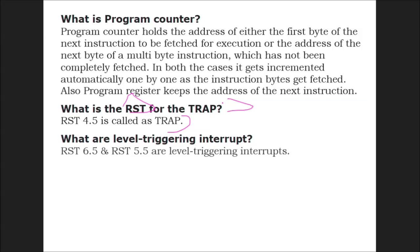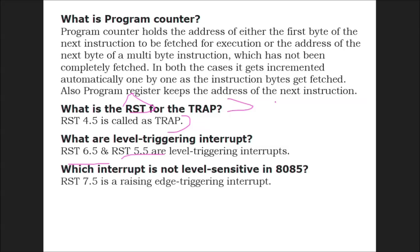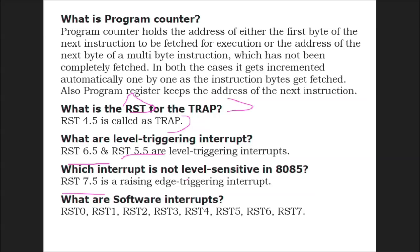What is level trigger or triggering interrupt? RST 6.5 and RST 5.5 are level triggering interrupts. Which interrupt is not level sensitive in 8085? RST 7.5 is a rising edge triggering interrupt. What is software interrupt? RST 0 to RST 7 are software interrupts.